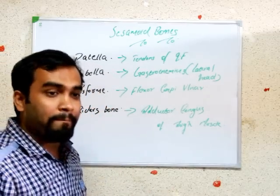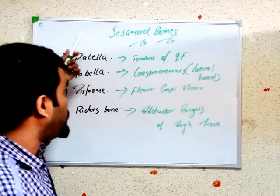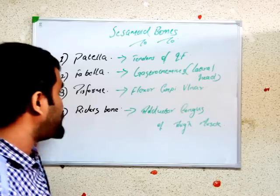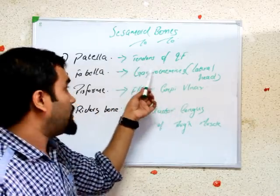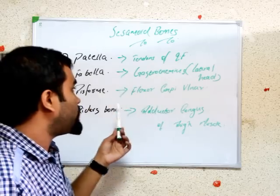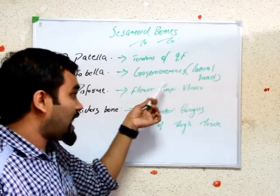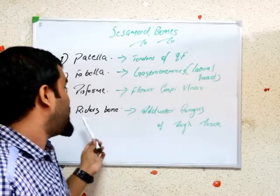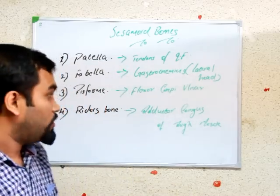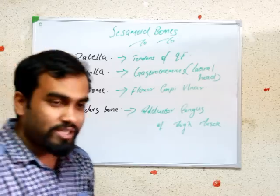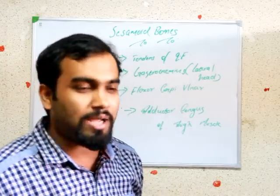To summarize sesamoid bones: these are bones that develop from tendons rather than membranes or cartilages. The four important ones are: patella (from quadriceps femoris tendon), fabella (from gastrocnemius), pisiform (from flexor carpi ulnaris), and rider's bone (from adductor longus of the thigh). This completes the first part of anatomy. Thank you for watching — please share and subscribe.